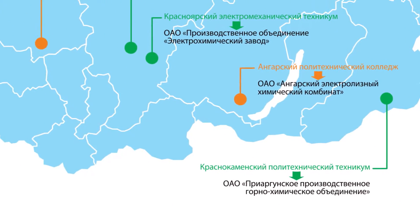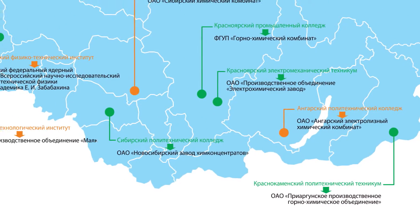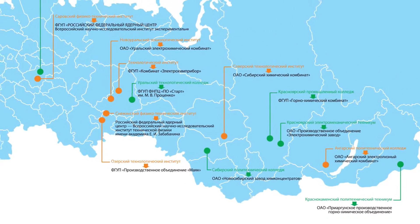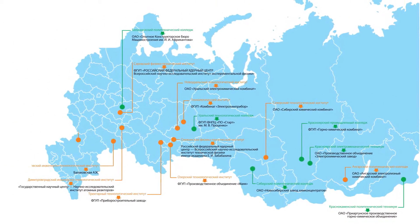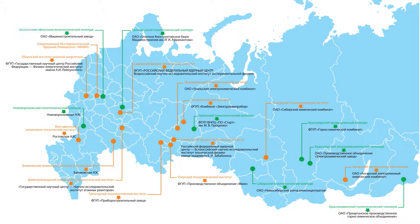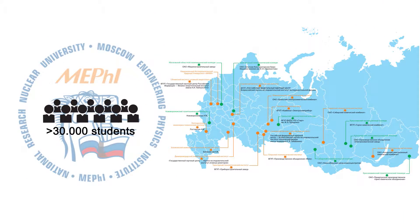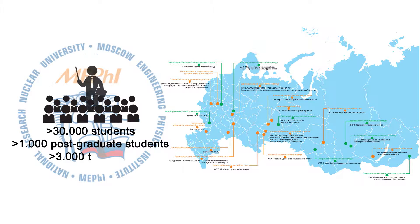Today, Moscow Engineering Physics Institute is an educational holding with the largest regional network. National Research Nuclear University consists of more than 20 regional subdivisions, more than 30,000 students, about 1,000 postgraduate students, 3,000 teachers and also numerous scientific and educational centers. Every student may choose for himself an individual educational trajectory and get a unique education.